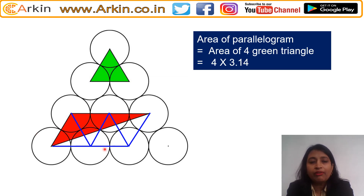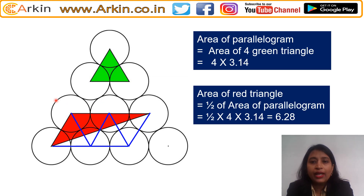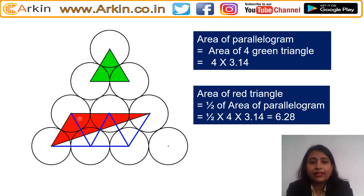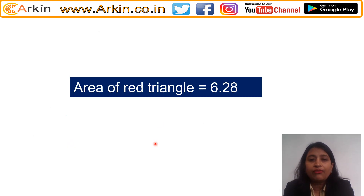The area of the parallelogram will be the area of four such green triangles, so that is 4 × 3.14. The area of the red triangle will be half the area of the parallelogram, so that is (1/2) × 4 × 3.14 = 6.28. So 6.28 will be the area of this red triangle. The answer is 6.28 square units.